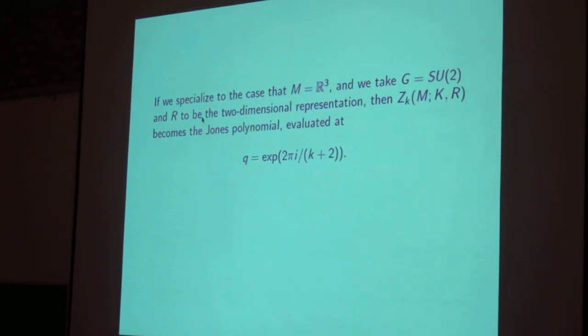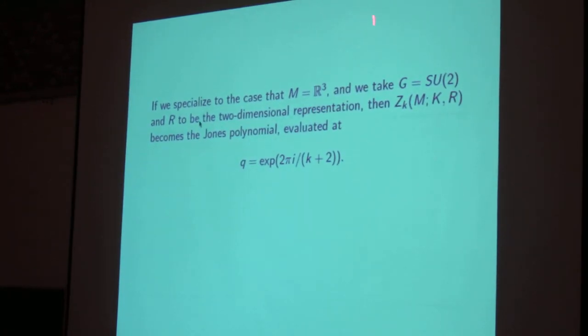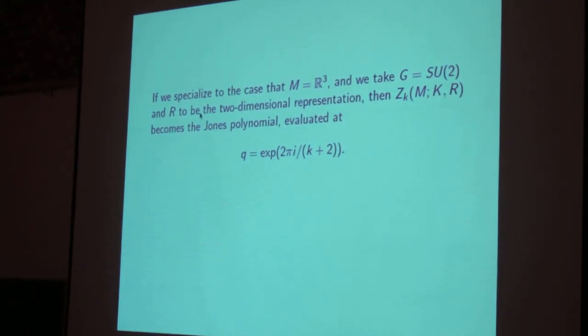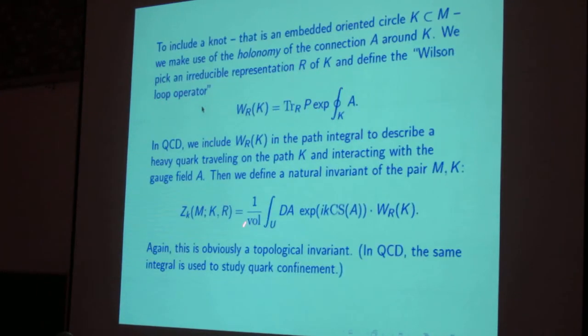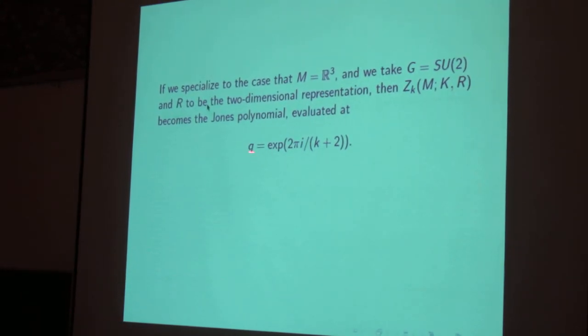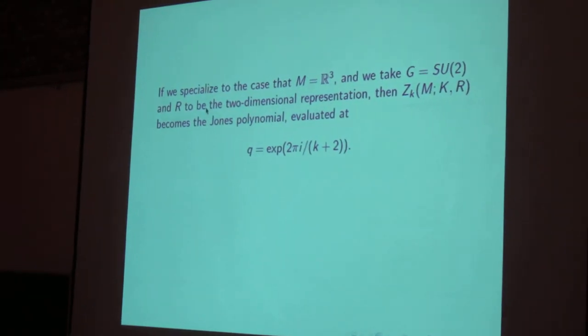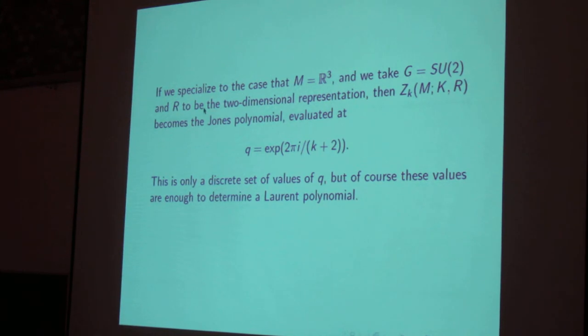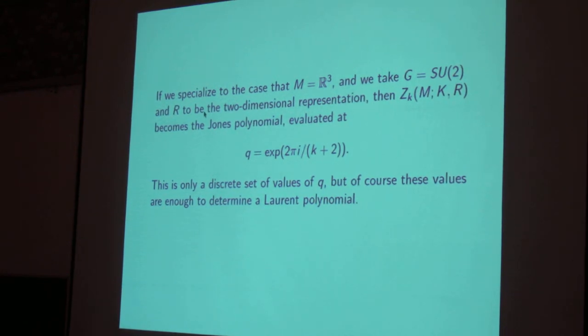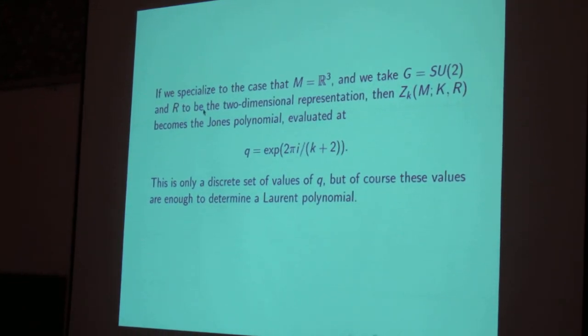So if we specialize to the case that the three-manifold is just ordinary three-space R³, and we take the gauge group to be SU(2), the smallest non-abelian Lie group, and R to be the two-dimensional representation, then it turns out that this path integral is the Jones polynomial evaluated at a particular value of q. So that's only a discrete set of values of q, but since the Jones polynomial is a polynomial, knowing its value at these discrete set of values determines it, although it doesn't give a natural explanation from this point of view of why it's a Laurent polynomial.